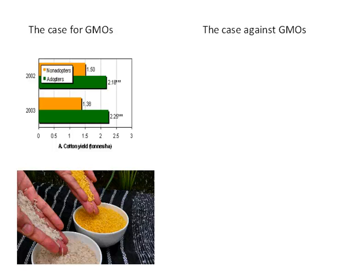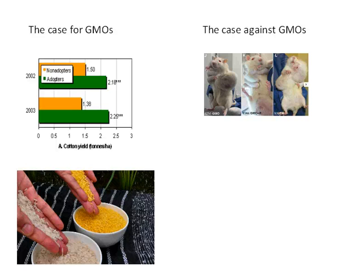The case against GMOs has basically three components. The first is the worry that it's going to be harmful to people's health to eat GMOs. The picture of the rats with the giant tumors is from a kind of scare image that circulates on social media sometimes. The actual research this is based on is a little shaky.